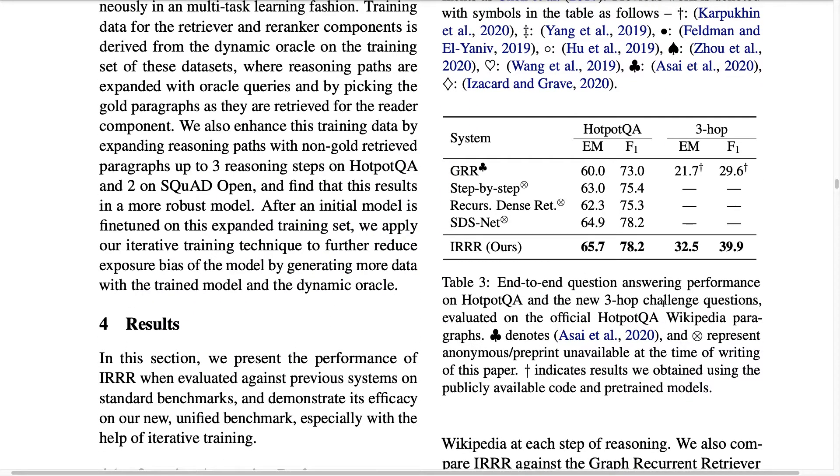Another data set is the HotpotQA data set where you have to actually reason over multiple paragraphs and not just a single paragraph like SQuAD, so it's a more sophisticated multi-hop question answering data set. There the IRRR also outperforms the previous benchmarks or it's very similar to them in terms of F1 score, demonstrating that this capacity to retrieve paragraphs and to find the correct answer seems to be competitive also to previous models on this more complicated benchmark.